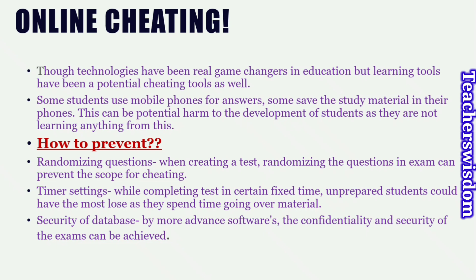This can be a potential harm to the development of the student, as they are not learning anything. How to prevent cheating: randomizing questions — when creating a test, randomizing the questions can prevent the scope of cheating. Timer setting can also prevent cheating by requiring completion within a fixed time. Unprepared students would lose the most as they spend time going over material. Security of database through more advanced software can also achieve confidentiality and security of the exam.